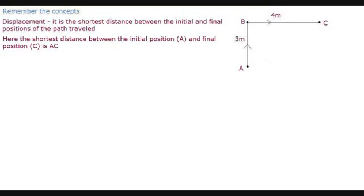Remember the concepts: displacement is the shortest distance between initial and final positions of the path traveled. From the diagram, we see that A is the initial position and C is the final position of the car. And hence the shortest distance between initial position A and final position C is the length of the line AC.